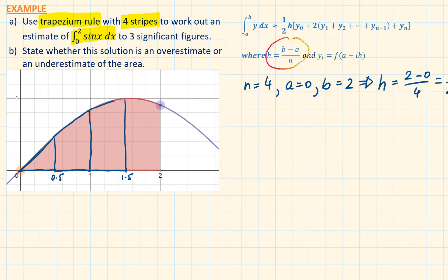I highly recommend you to draw in the strips on the graph. To work out the y values, we are going to use y equals sine x. At the starting point a, the x is equal to 0. Substituting this will give us the y0, which is 0.